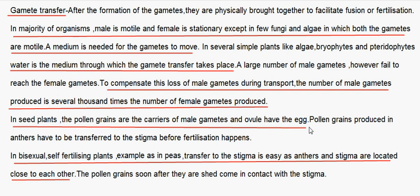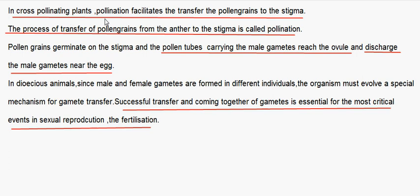In seed plants, pollen grains are the carriers of male gametes and the ovule contains the egg. Pollen grains produced in the anthers must be transferred to the stigma before fertilization occurs. In bisexual, self-fertilizing plants like peas, transfer to the stigma is easy as anther and stigma are located close together. In cross-pollinating plants, pollination facilitates transfer of pollen grains to the stigma. Pollen grains germinate on the stigma, and pollen tubes carry the male gametes to the ovule, discharging them near the egg.